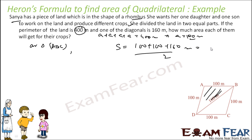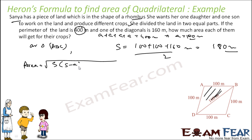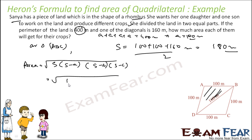You divide by 2: 100 plus 100 plus 160 equals 360, divided by 2 gives 180 meters as the value of S, that is the semi-perimeter. So the area using Heron's formula will be root of S(S minus A)(S minus B)(S minus C). The value of S is 180 meters. S minus A is 180 minus 100.